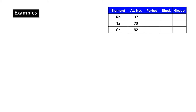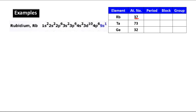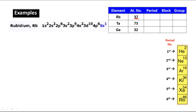The first element is Rubidium with atomic number 37. Once you know the atomic number, write the electronic configuration. You don't have to write the full elaborate configuration — you can use the previous noble gas shorthand. For Z=37, the previous noble gas is Krypton with atomic number 36, so you write [Kr] plus one extra electron.